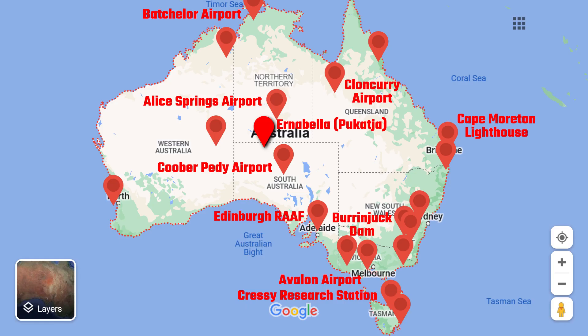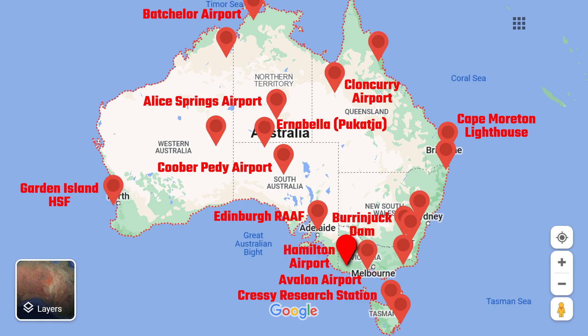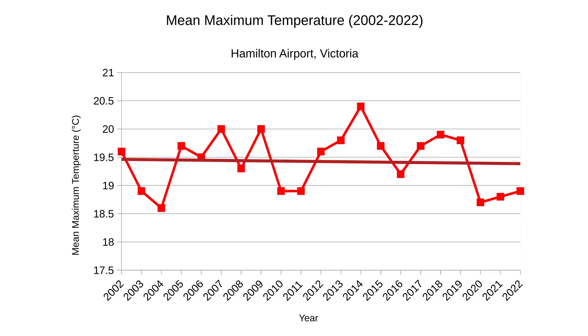Our first Western Australian location, Garden Island, lies about 5 kilometres off the Western Australian coast. Looking at the chart, we can definitely see an increase in maximum temperature over time by about 0.4 of a degree. Next, let's head to Hamilton Airport, located a few hundred kilometres west of Melbourne. It's experienced a slight decrease in average temperature over the last 20 years.